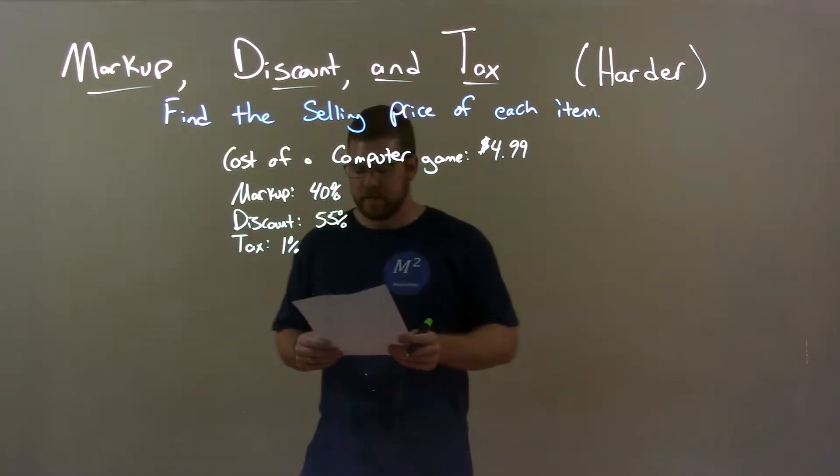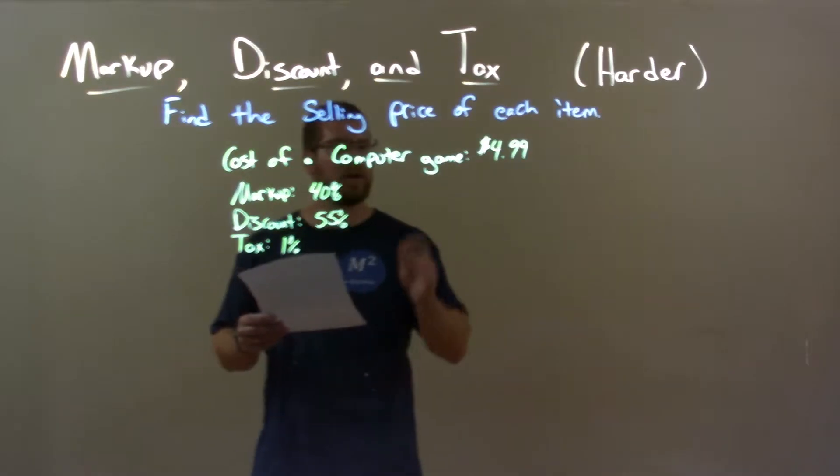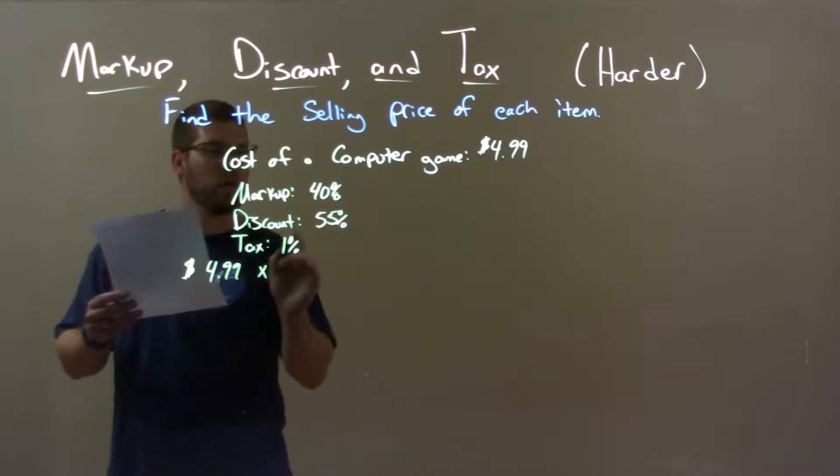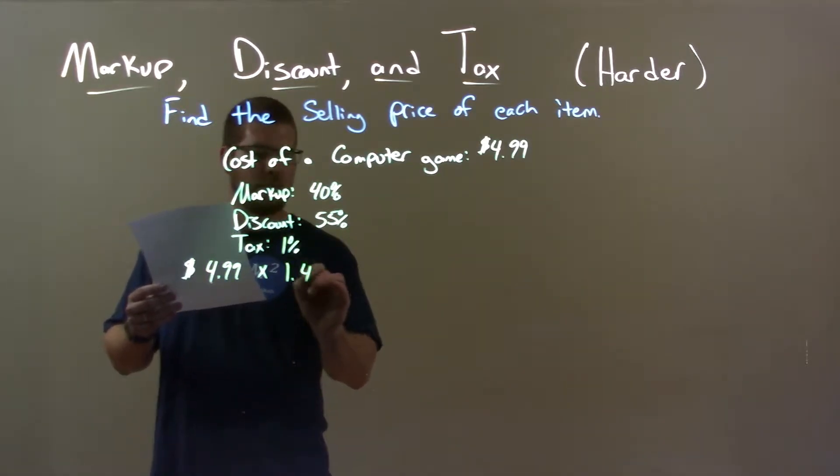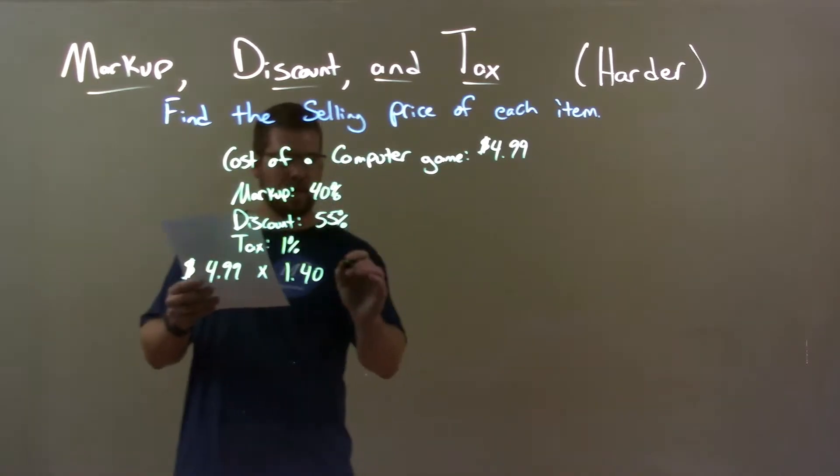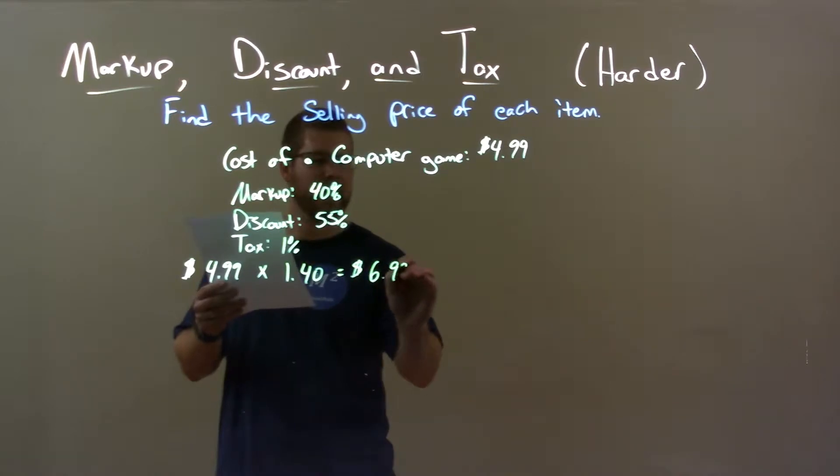Well, the first thing here is I look at the cost of the computer game. I have to apply that 40% markup. So, we take the cost of the computer game, $4.99, I'm going to multiply that by 1.40. That shows me that 40% markup. This gives us an after markup cost and price of $6.99.